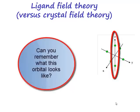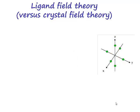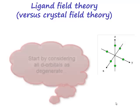This dz squared orbital points along the z axis. If you imagine that you don't have points of negative charge as your ligands, imagine that you take your d-orbitals which are degenerate.